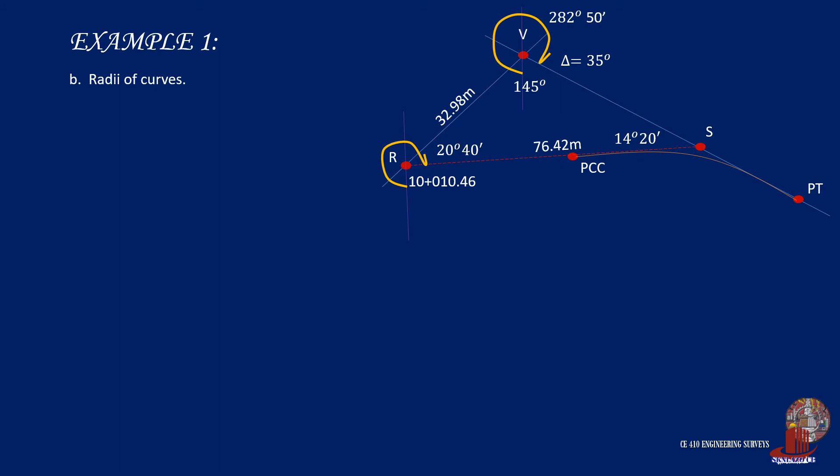Next, to be able to identify station PT, one has to know the elements of the second curve. But knowing the length of the common tangent, which is 76.42, we can draw out T2 by deducting T1, and that will be 24.17 meters. T2 is also R2 times tangent of delta 2 over 2, and by rearranging the knowns, we can compute for R2, which turns out to be 192.22 meters.